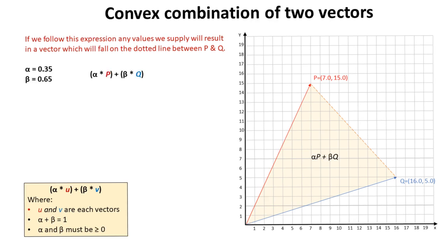So we're going to supply the values 0.35 and 0.65. Remember, these can be any values you like as long as both of them together equal 1 and both of them are greater than or equal to 0. Well, they do. We can now substitute these values into the expression and we should have a vector that ends up on this dotted line.